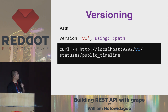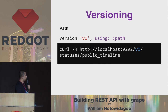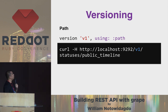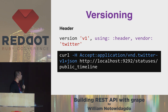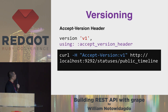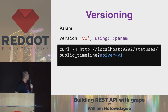Then we have versioning. There are four versioning strategies provided by GRIB. The first and the default is path, using path like this. Then using header, simply like this — using header and vendor — then the accept version header, and then parameters.